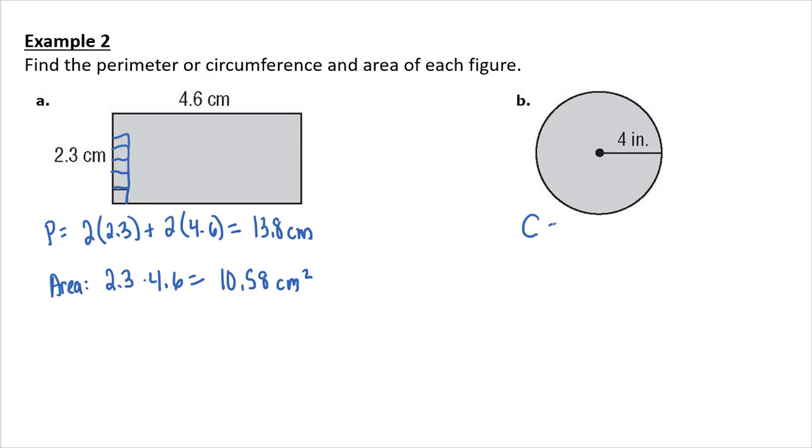B, circumference. 2 pi r, since they gave me my radius. 2 pi times 4. So, I'm going to leave that as 8 pi inches. Area. Pi r squared. Pi times 4 squared. So, I have 16 pi, and that's square inches. And I want you guys to get used to leaving things in terms of pi. I know there's a pi button on your calculator that we could use, but I'd like you guys to leave everything in terms of pi.